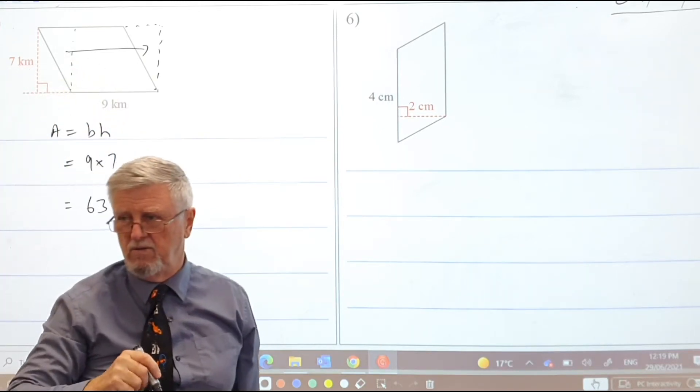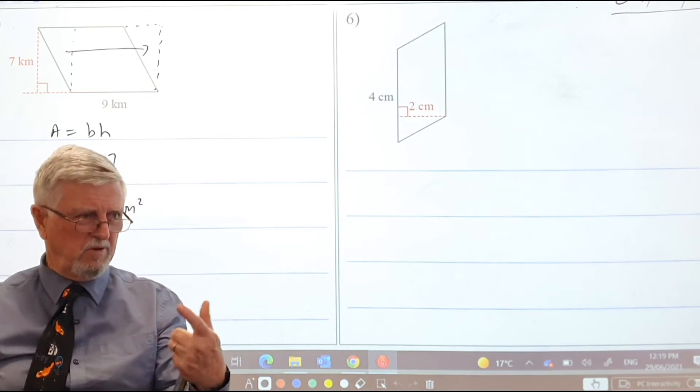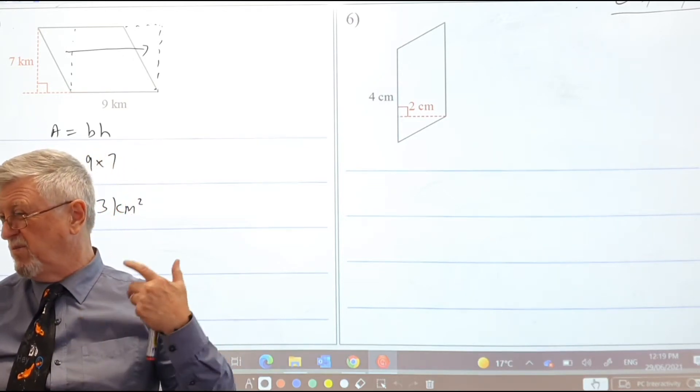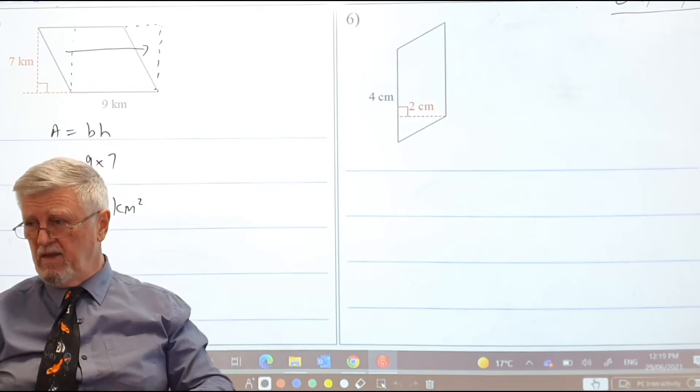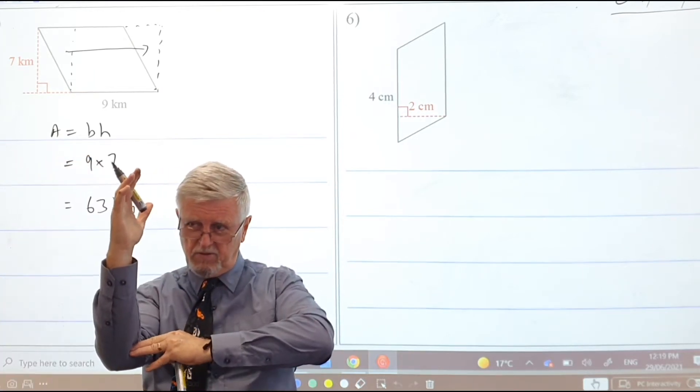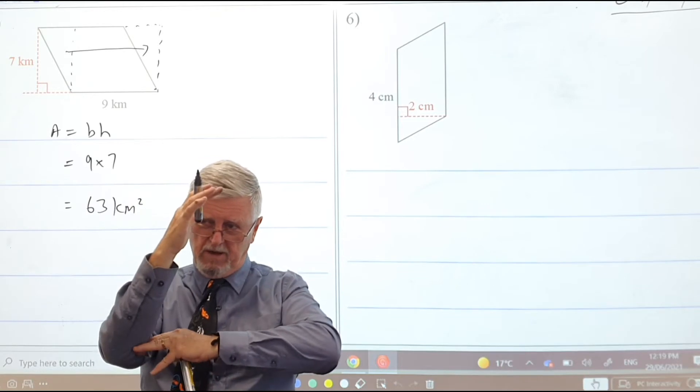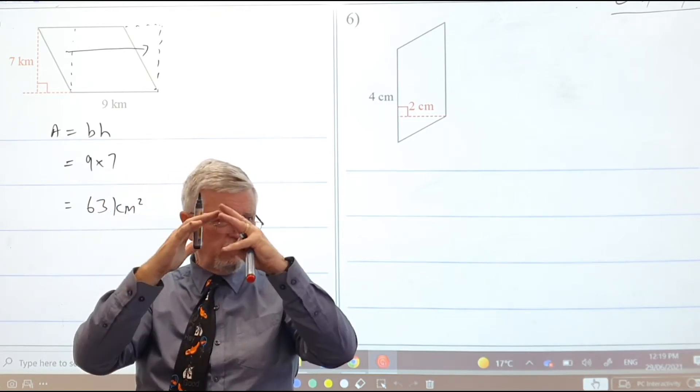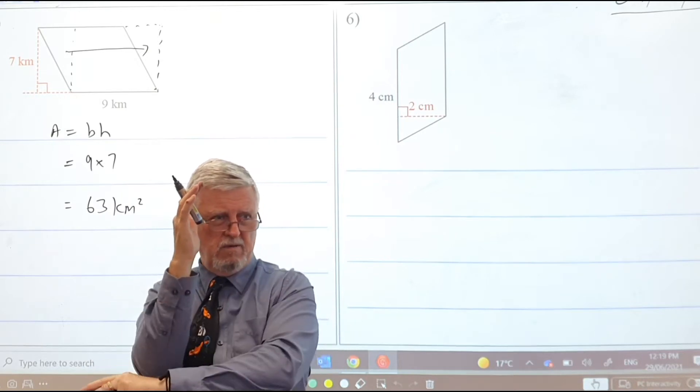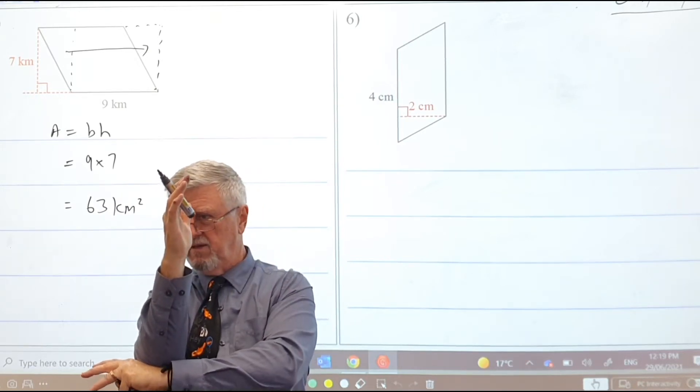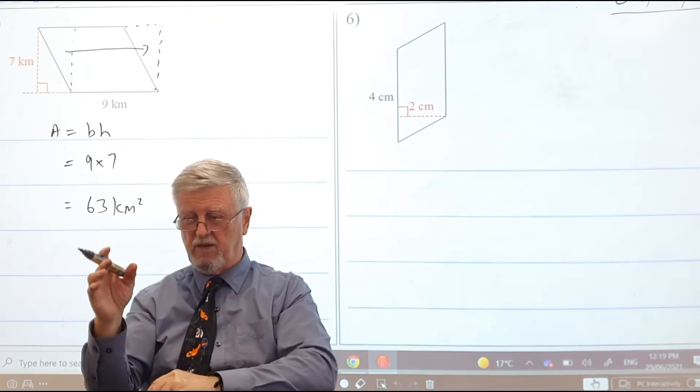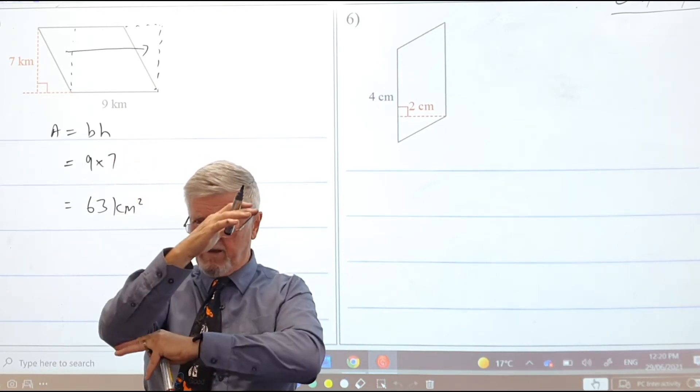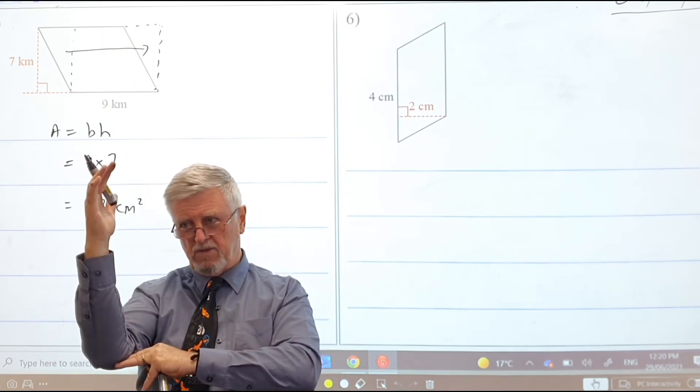So what do we call them for a rectangle? Don't call them base times height. We call them length and width, or when I was a boy, I think it was length times breadth. So a rectangle is multiply the two numbers. A parallelogram is also multiply the two numbers. So let's go again. Square and rectangle, multiply the two numbers. Parallelogram, multiply the two numbers.